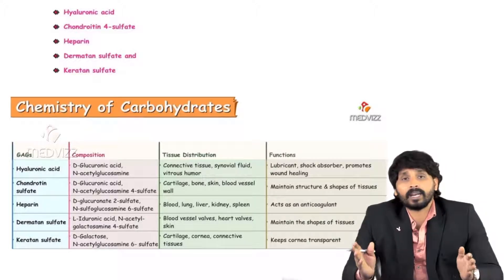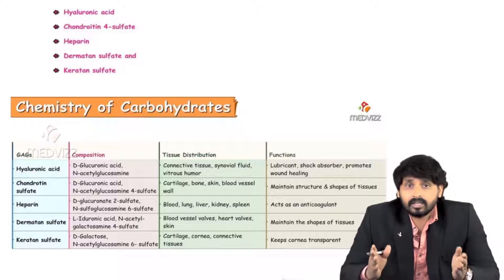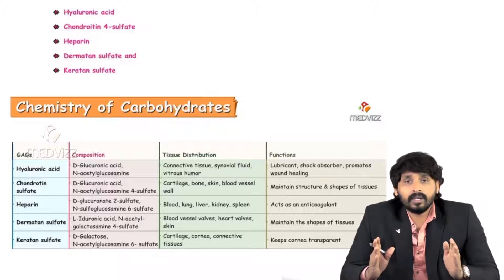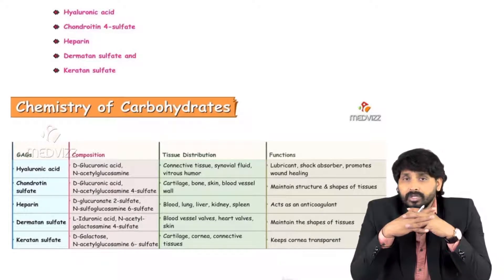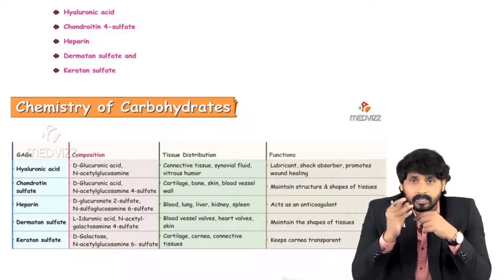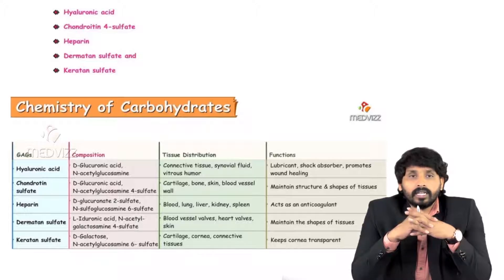Next is heparin, which we know as an anticoagulant. Its composition is D-glucuronate 2-sulfate and N-sulfo-glucosamine 6-sulfate. Its tissue distribution includes blood, lung, liver, kidney, and spleen. The main function is the anticoagulant function — it prevents clotting in the circulation of blood.